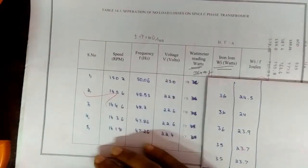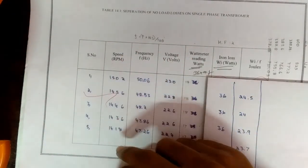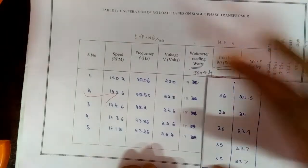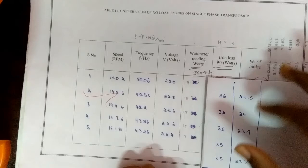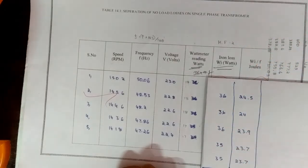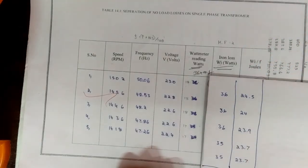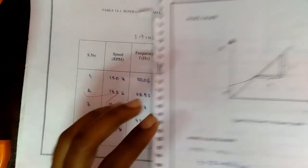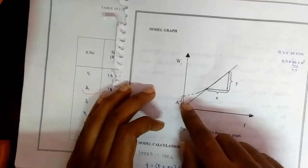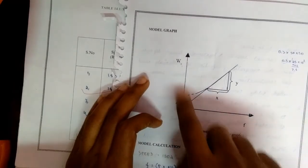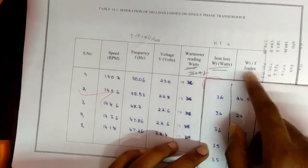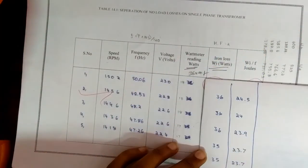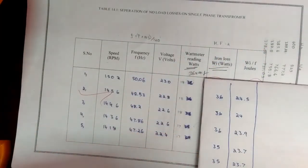So for this speed and for this voltage values I'll get the reading for frequency, wattmeter readings, iron loss, and for joules. You can find a and b using the graph drawn between watts and frequency for tabulating iron loss and joules. With this tabulation the experiment is over. Thank you.